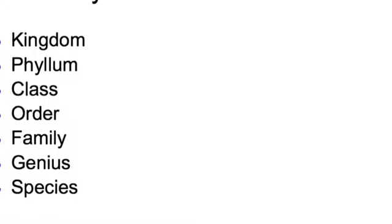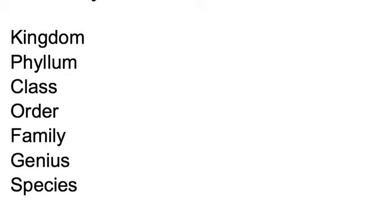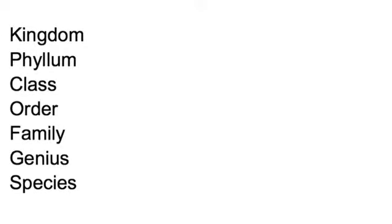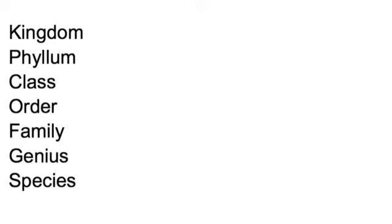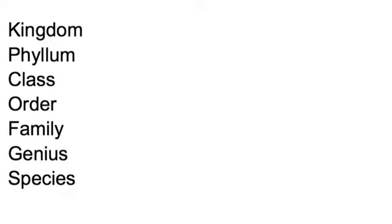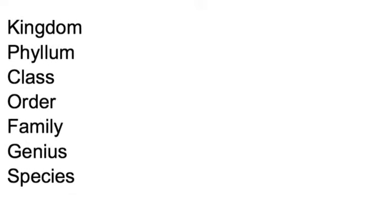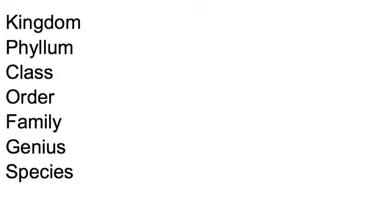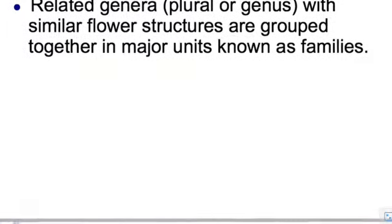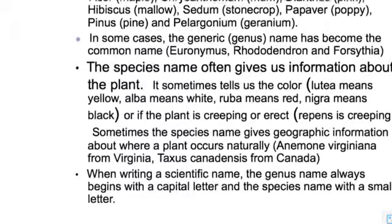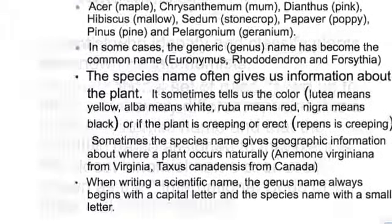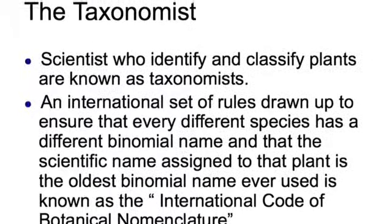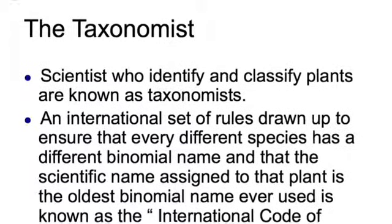To remember the hierarchy, I take the first letter of each word and came up with: King Philip came over from Germany speedily — and then I can remember the words from that. Related genera with similar flower structures are grouped together and known as families. The species name gives us information about the plant. A taxonomist is someone who identifies and classifies plants.